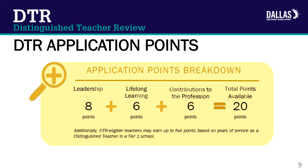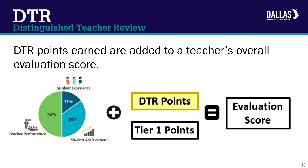With these changes in mind, teachers can now earn up to 20 points by completing the 2018-2019 DTR application. There are up to 8 points available from the leadership domain, 6 points from the lifelong learning domain, and 6 points from the contributions to the profession domain. DTR points earned through the DTR application will be added to the teacher's overall evaluation score.